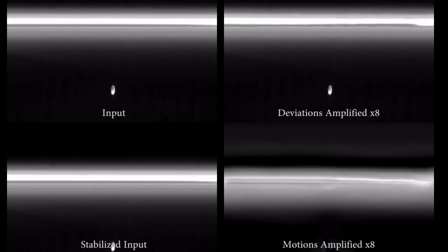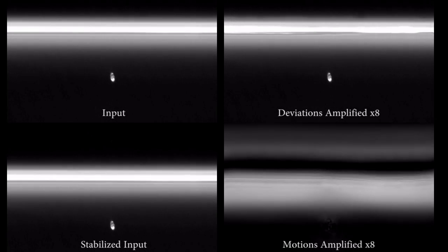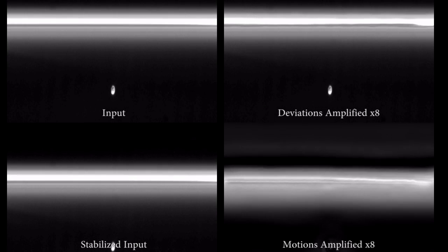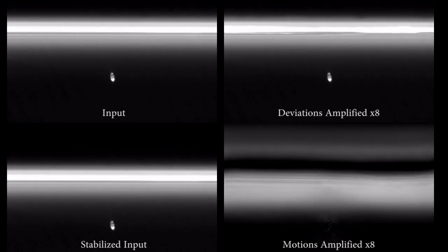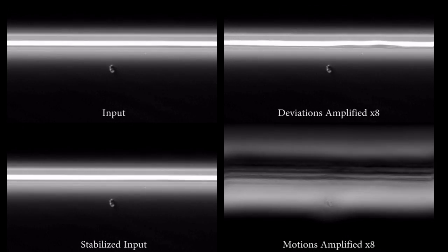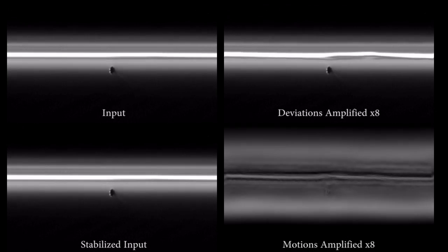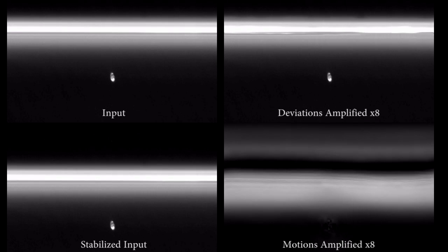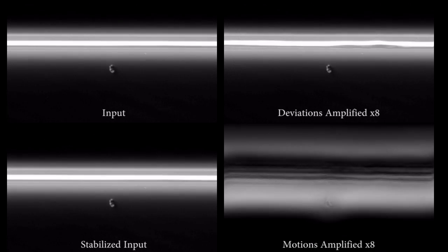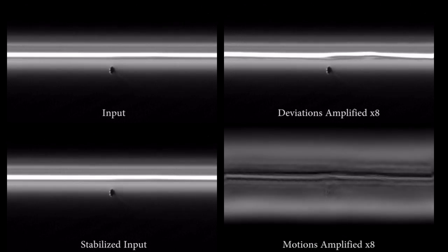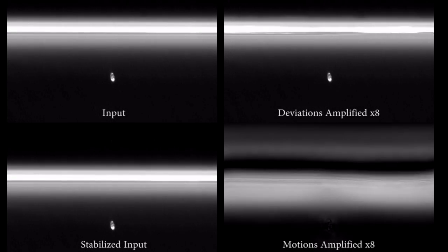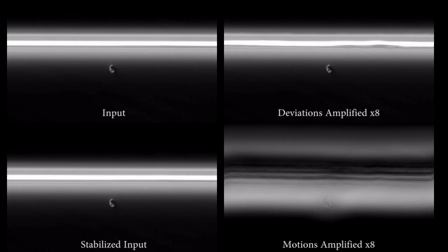The resulting temporal consistency validates our technique. We also stabilized the sequence and motion magnified it, but because there are so many changes over time even after stabilization, motion magnification does not do a good job. Applying our technique to such images could be a useful tool for astronomers studying these complex interactions.